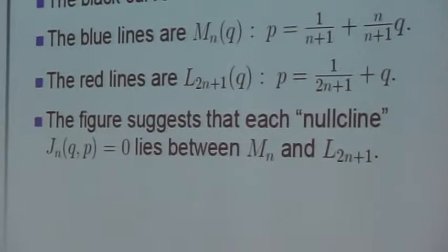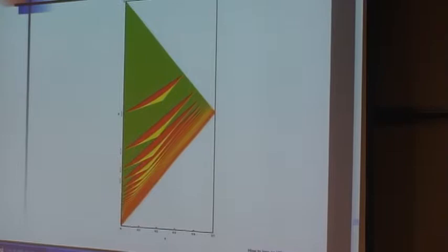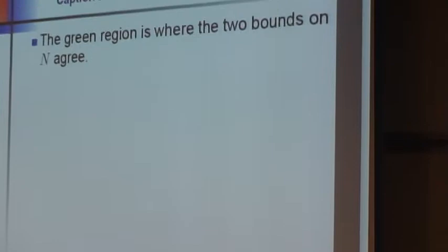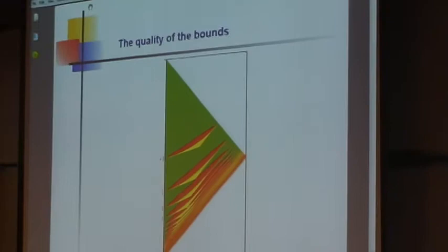Here's a little comment about how good the bounds are. Here's a graph in which I'll do the same stunt. I'll say what the various colors mean and then back up to it. But again we're in the p-q plane. The green region is where the two bounds on the capital N agree. So wherever you see green, the upper bound agrees with the lower bound for capital N.